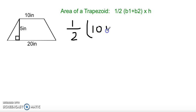plus base two, which is 20 inches, end parentheses, times the height, which is right over here, 5 inches.